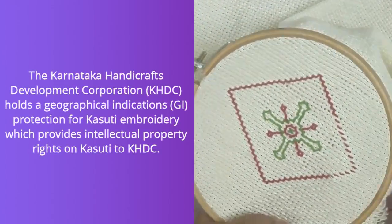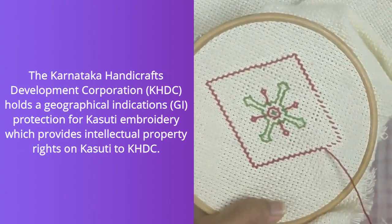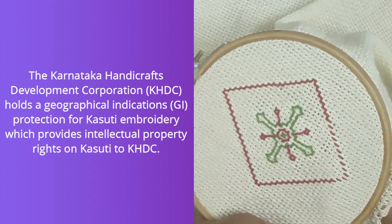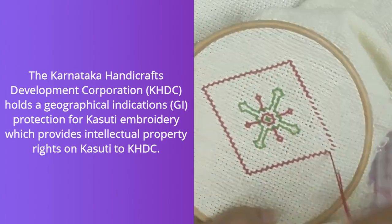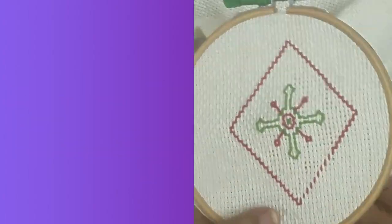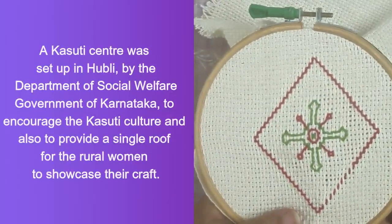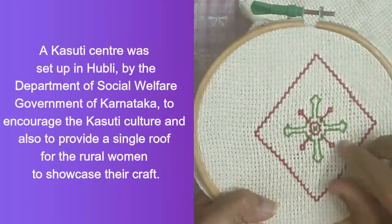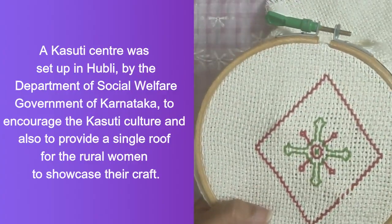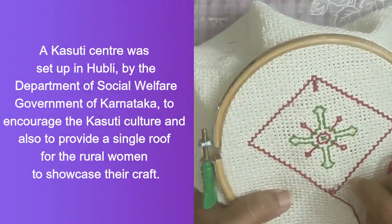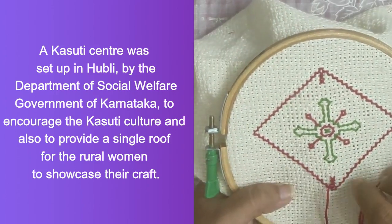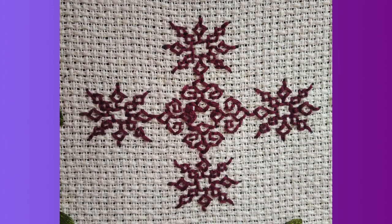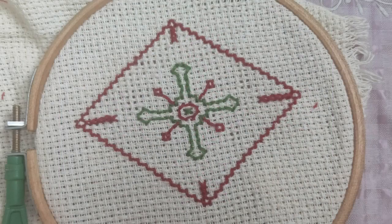The Karnataka Handicrafts Development Corporation holds a Geographical Indications protection for Kasuti embroidery, which provides intellectual property rights on Kasuti to KHDC. A Kasuti center was set up in Hubli by the Department of Social Welfare, Government of Karnataka, to encourage the Kasuti culture and to provide a single roof for rural women to showcase the craft. Kasuti is a beautiful embroidery and a very special craft, but is suffering from poor patronage with not many people willing to take the craft seriously.